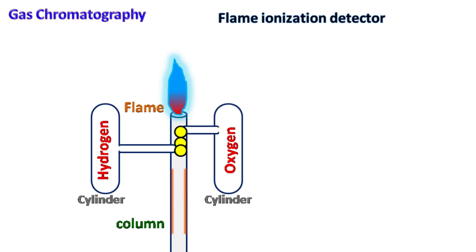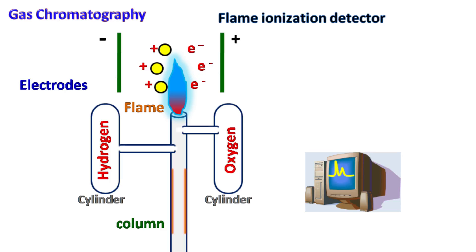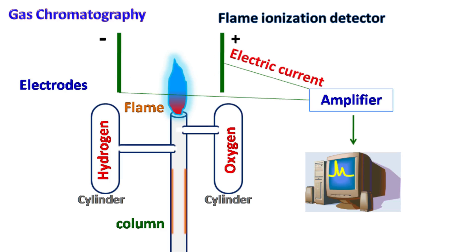When the sample molecules reach the flame, they get ionized and the electrons are released across the flame. There are two electrodes, each with a positive and a negative charge. The electrodes detect electrons generated by the ionization of the sample. Electrons are detected in the form of current which is amplified and detected by the computer.